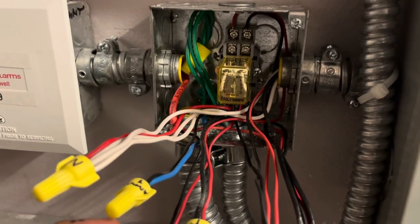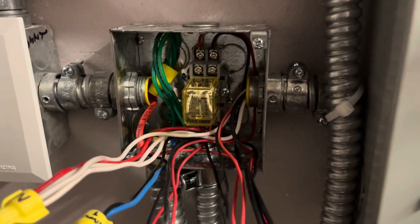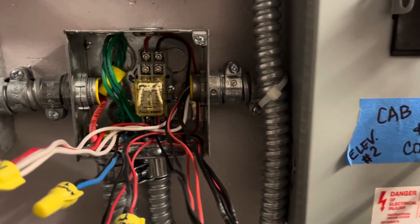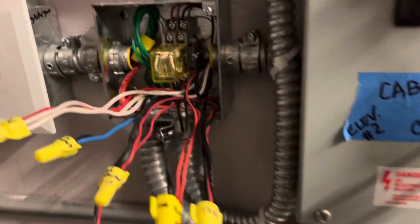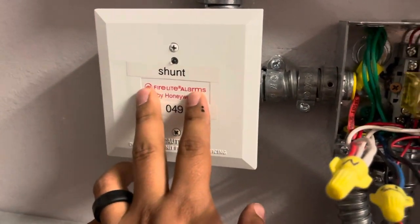Hey guys, this is John Spear with Warhammer. Today I'm going to be explaining how to do a double shunt on an elevator system. So just to give you the components, this is your fire alarm shunt.